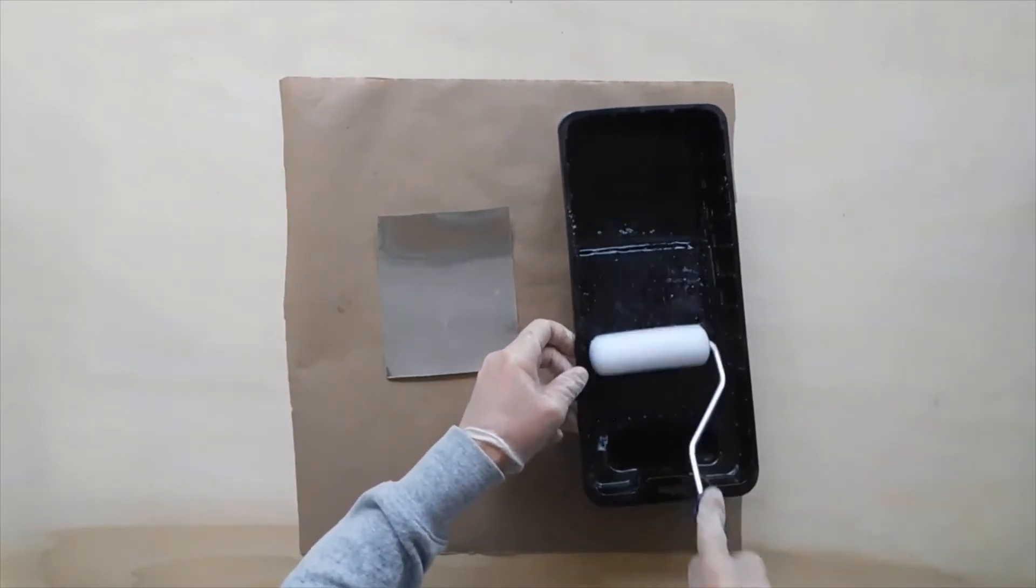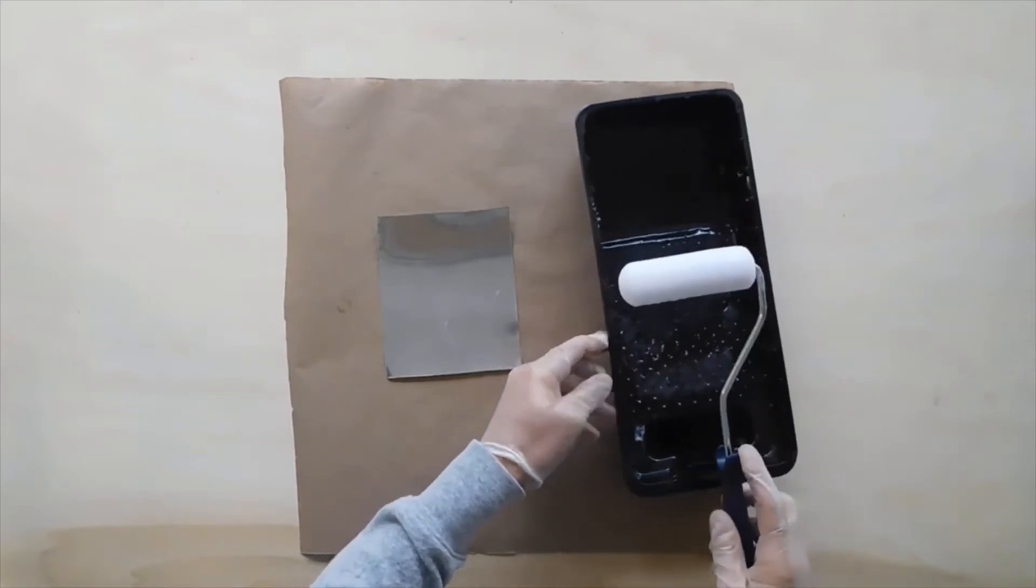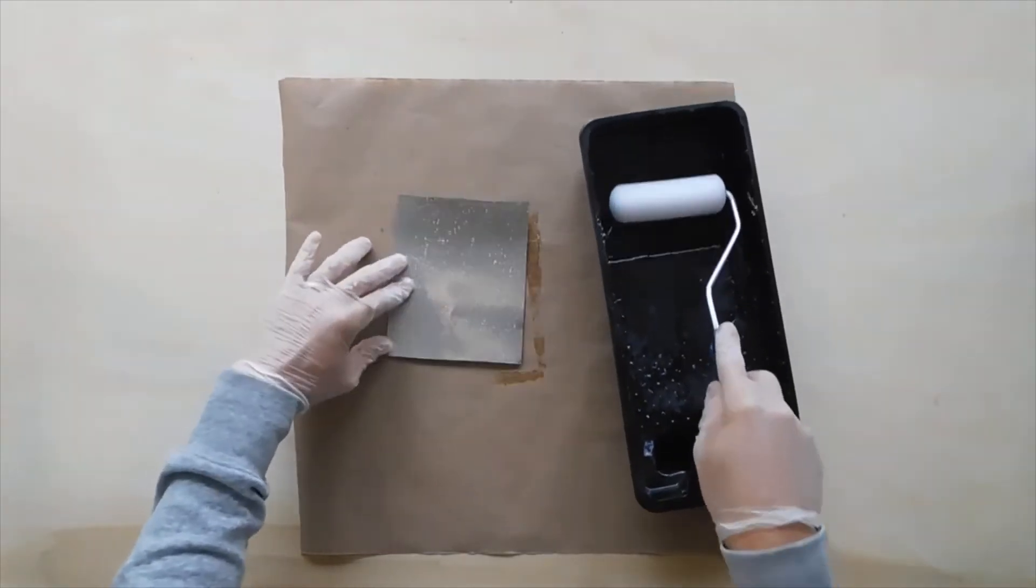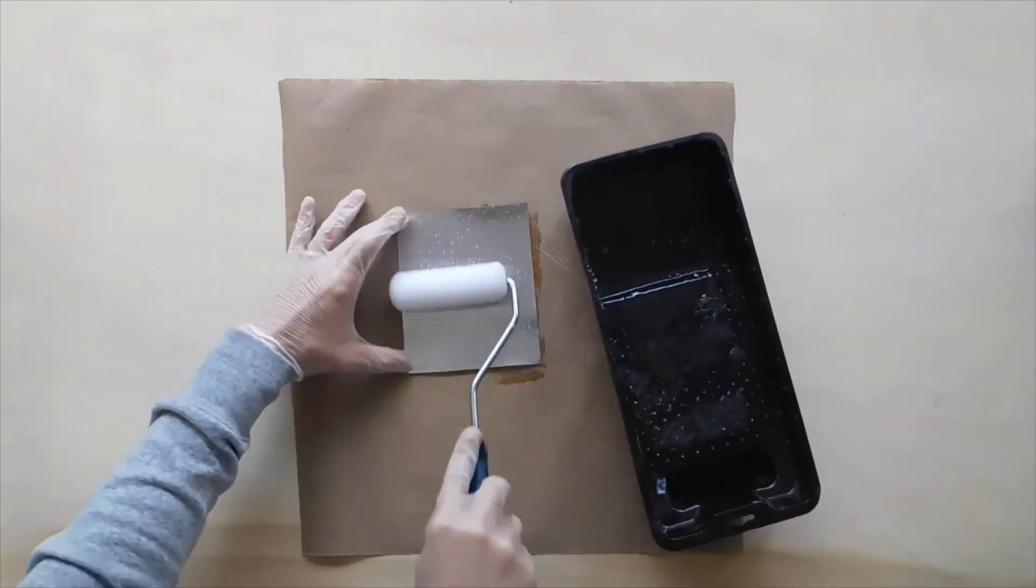Not pictured, but since spur has a polyurethane backbone and PU's like moisture, it might not be a bad idea to lightly mist the adhesive with some water from a spray bottle to help facilitate cure.